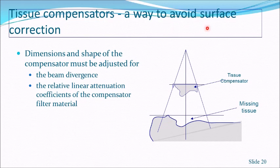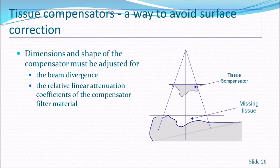Another approach to avoid surface correction is using tissue compensators shaped to match the patient's missing tissue. The divergence of the beam and the position of the compensator at the shadow tray level must be accounted for. A correction for the linear attenuation coefficient of the compensator material is also required. Modern tissue compensator-making machines can produce accurate 3D compensators, though they are expensive.